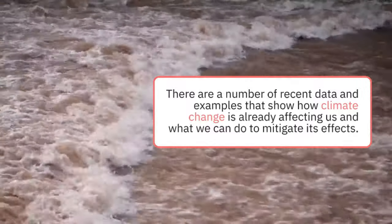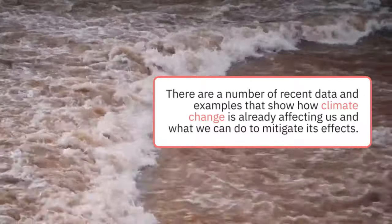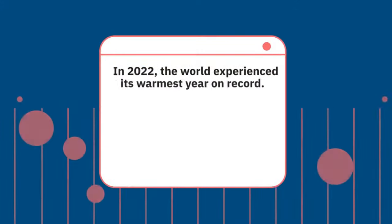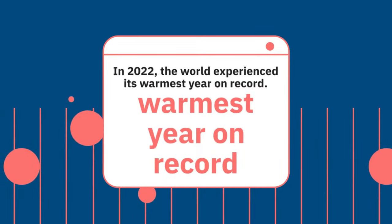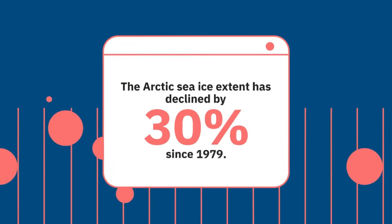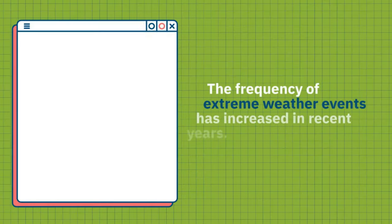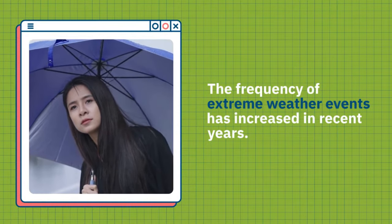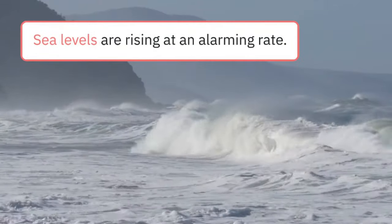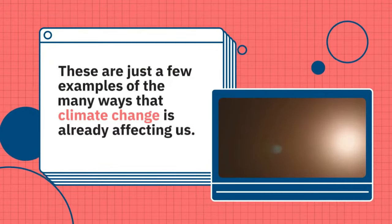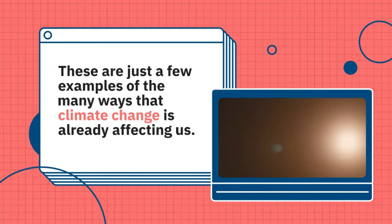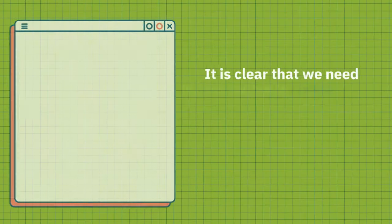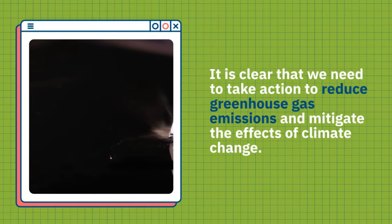Recent data and examples show how climate change is already affecting us. In 2022, the world experienced its warmest year. The Arctic sea ice extent has declined by 30 percent since 1979. The frequency of extreme weather events has increased in recent years, and sea levels are rising at alarming rates. These are just a few examples of the many ways climate change is already affecting us. It is clear that we need to take action to reduce greenhouse gas emissions and mitigate the effects of climate change.